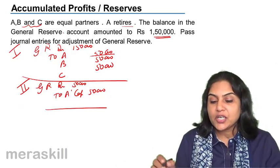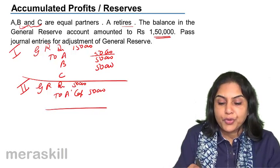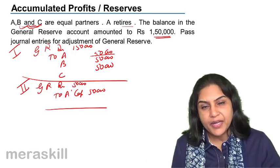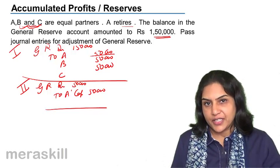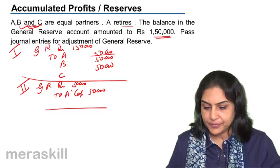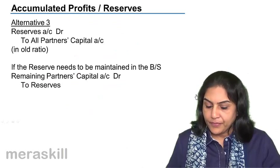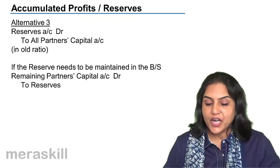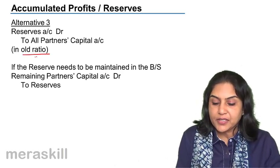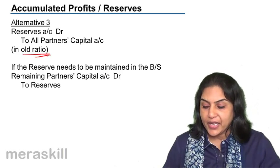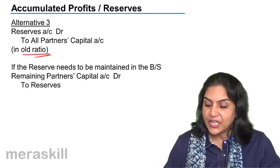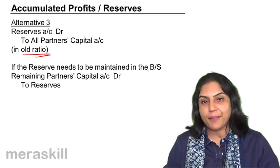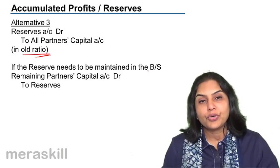This works because the profit sharing ratio between the remaining partners is the same before and after retirement. Yet another option would be: reserves account debit to all partners in the old ratio, and if the reserve needs to be maintained in the balance sheet, then remaining partners' capital accounts debit to reserves.